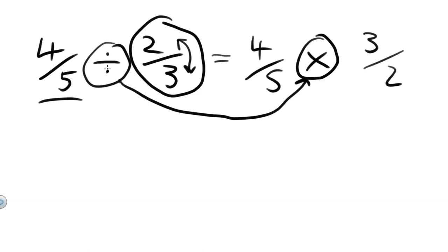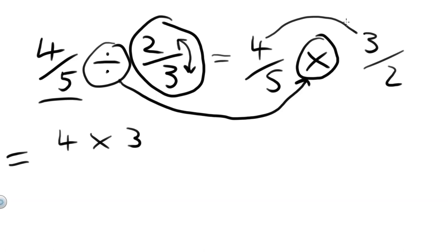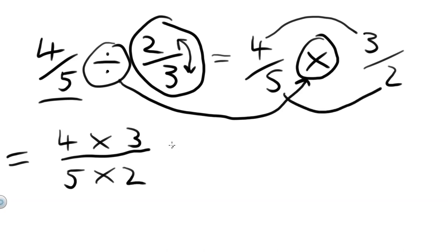So 4 fifths divided by 2 thirds is the same as 4 fifths times 3 over 2. Now that we have a multiplication, it's a fairly easy procedure from here — all we have to do is multiply the top by the top. So 4 times 3, over the bottom by the bottom, 5 times 2.